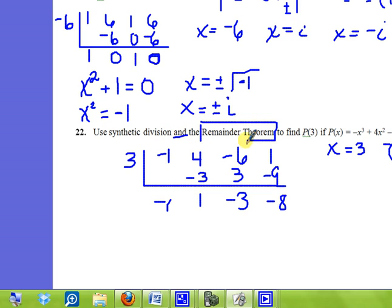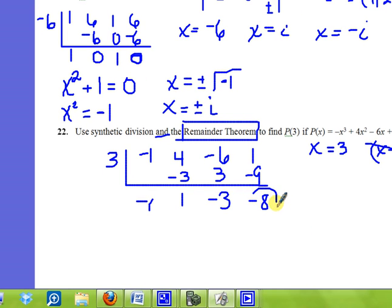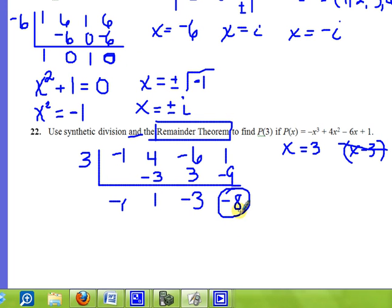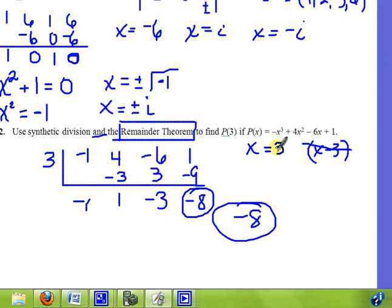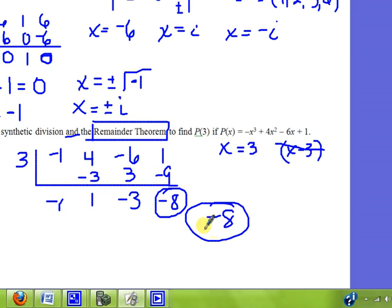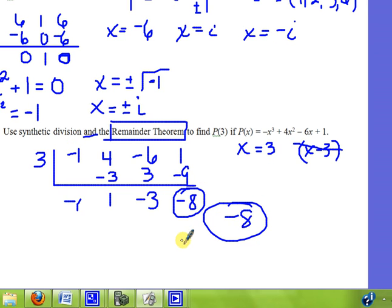Common sense will tell you that the remainder is negative eight. So don't put the variables back in there—it's pointless. All they're wanting us to give is the remainder. The answer is the remainder, so there you go: negative eight. That's what you get when you plug the three in for each of these x's and evaluate. The same exact answer you get as you use synthetic division. All right, that concludes this video, and hopefully we'll do okay on this test that's coming up.